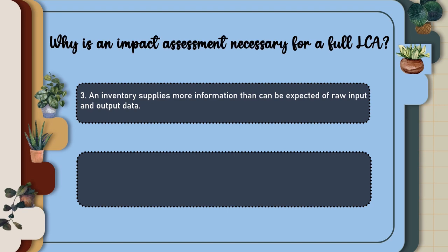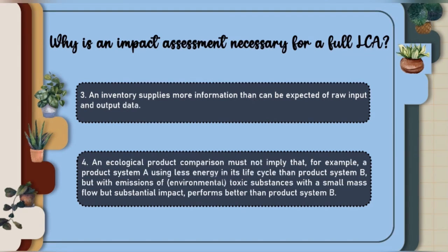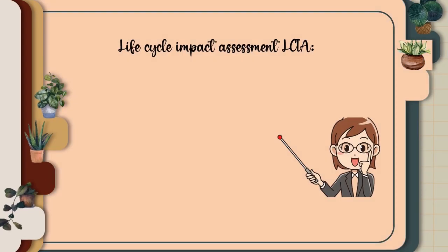An inventory supplies more information than can be expected of raw input and output data. An ecological product comparison must not imply that, for example, a product system A using less energy in its life cycle than product system B, but with emissions of environmentally toxic substances with a small mass flow but substantial impact, performs better than product system B.